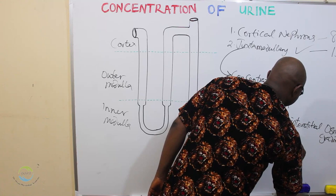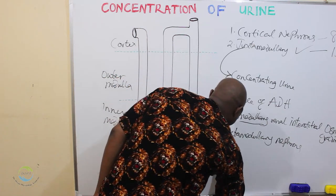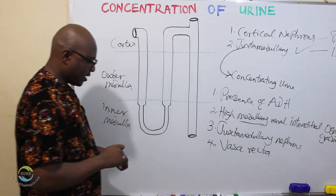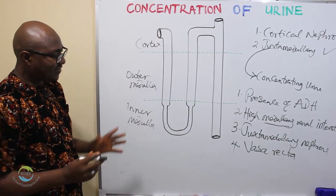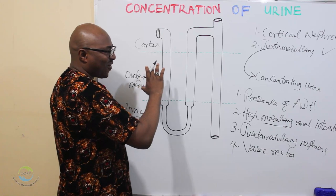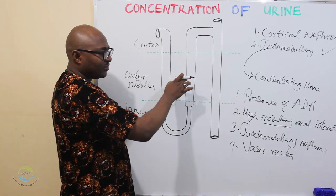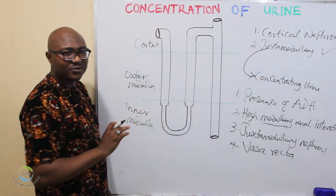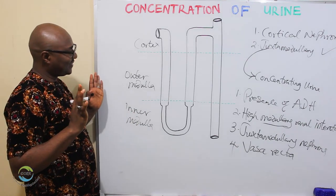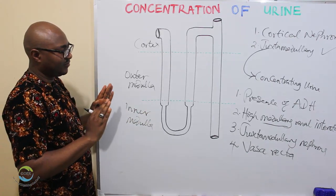Number three, you need juxtamedullary nephrons for urine to be concentrated — you will see the reason very soon. Number four, we need what is known as vasarecta. What's vasarecta? Vasarecta are the capillaries that surround the tubule of the juxtamedullary nephrons. In cortical nephrons they are called peritubular capillaries, but when it comes to juxtamedullary nephrons, they have a special name.